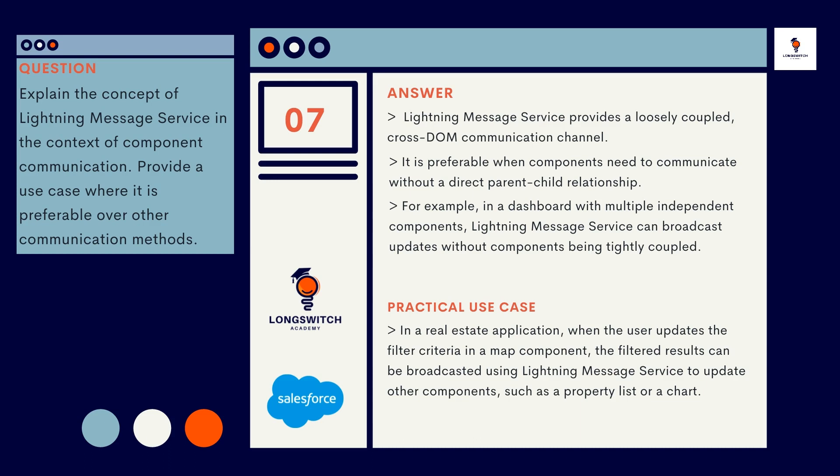Lightning Message Service provides a loosely coupled, cross-DOM communication channel. It is preferable when components need to communicate without a direct parent-child relationship. For example, in a dashboard with multiple independent components, Lightning Message Service can broadcast updates without components being tightly coupled. In a real estate application, when the user updates filter criteria in a map component, the filtered results can be broadcasted using Lightning Message Service to update other components, such as a property list or a chart.